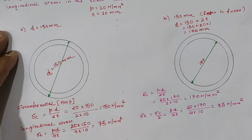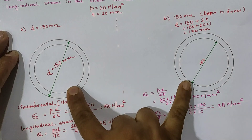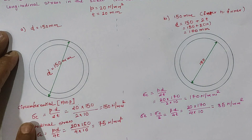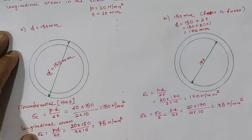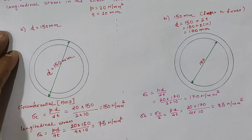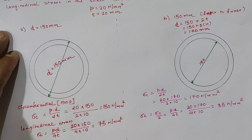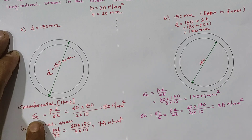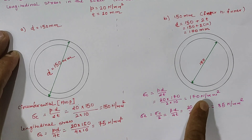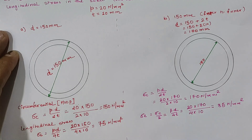So when the diameter is given and both cases are considered, the circumferential and longitudinal stress values are as shown. We can conclude that if we consider the outer-to-outer dimension, both stresses are minimum compared to the inner-to-inner dimension case.